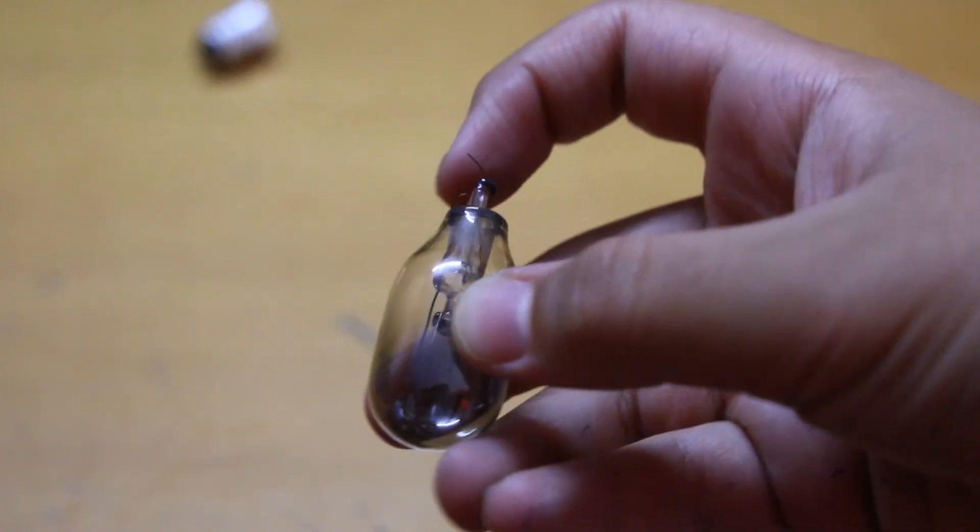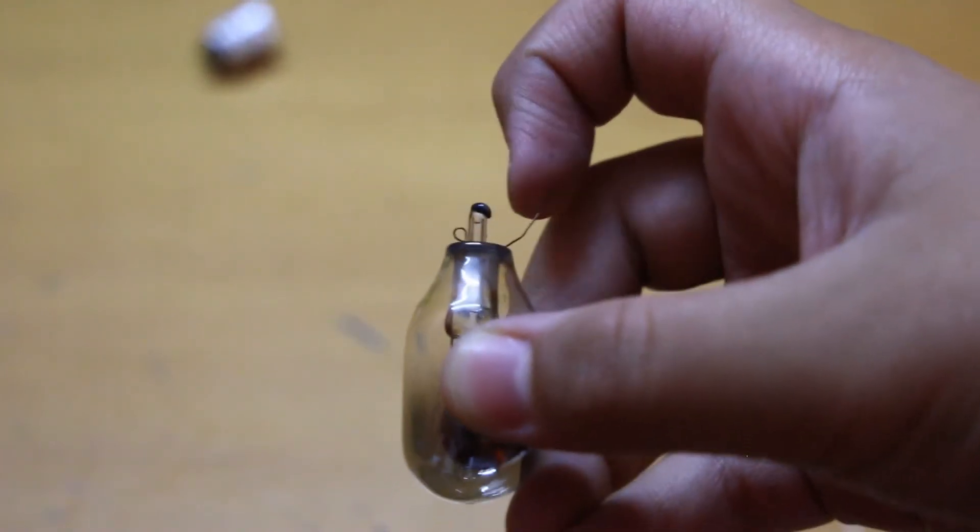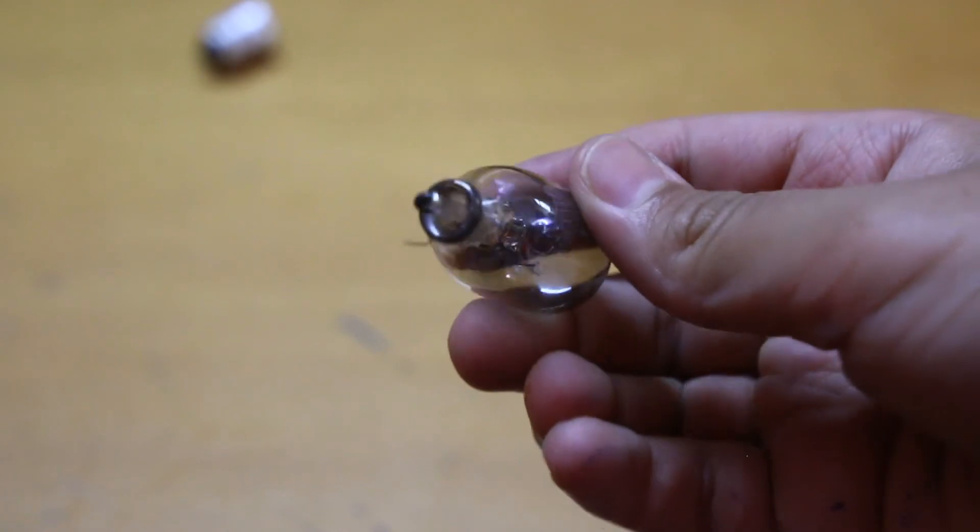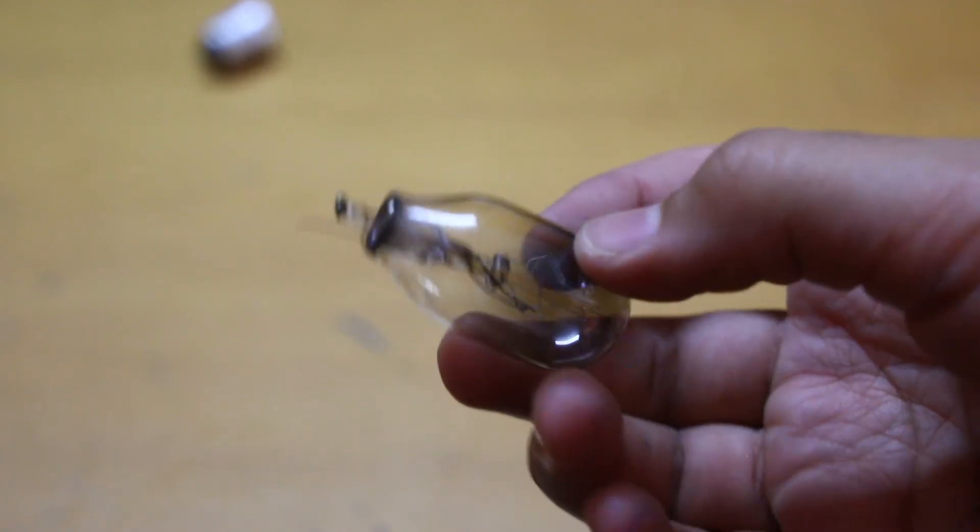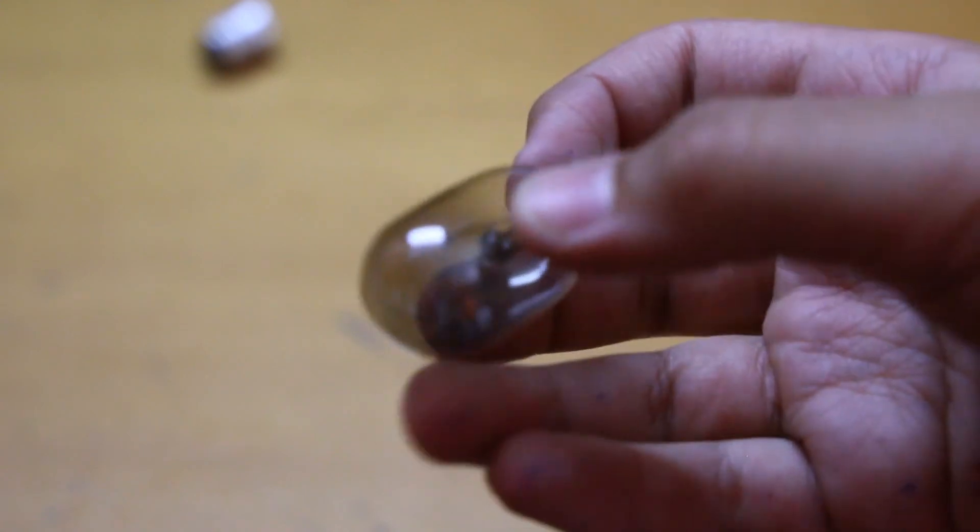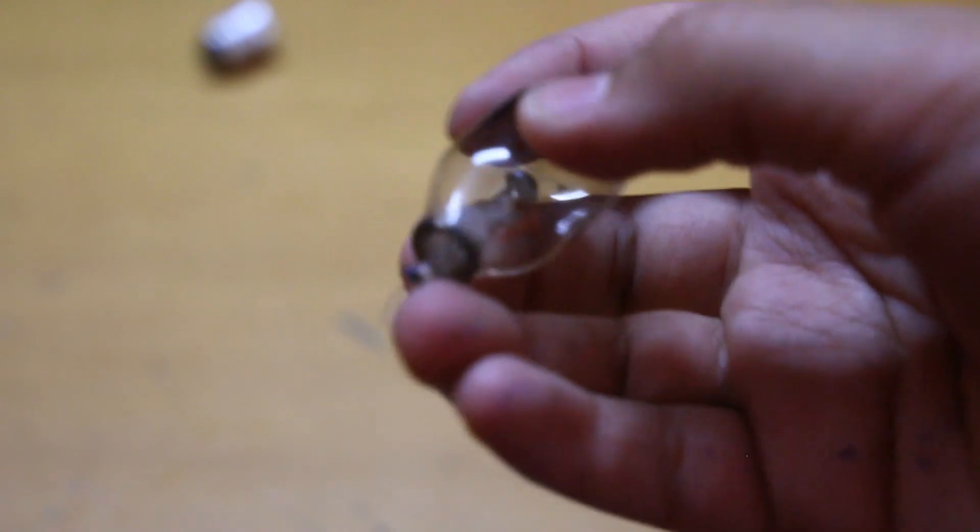The wire of the filament, you connect this when these things come in contact with the switch in the socket, and then the light turns on.